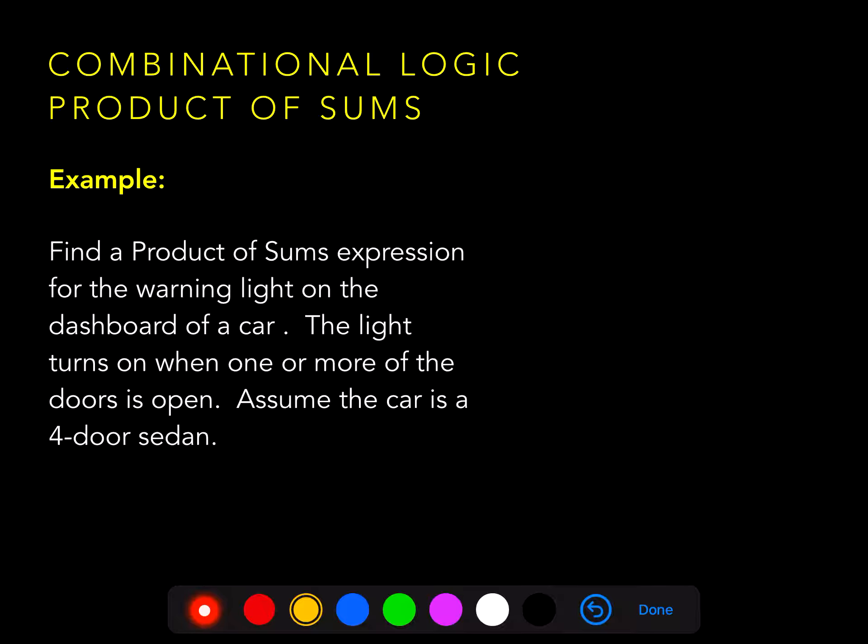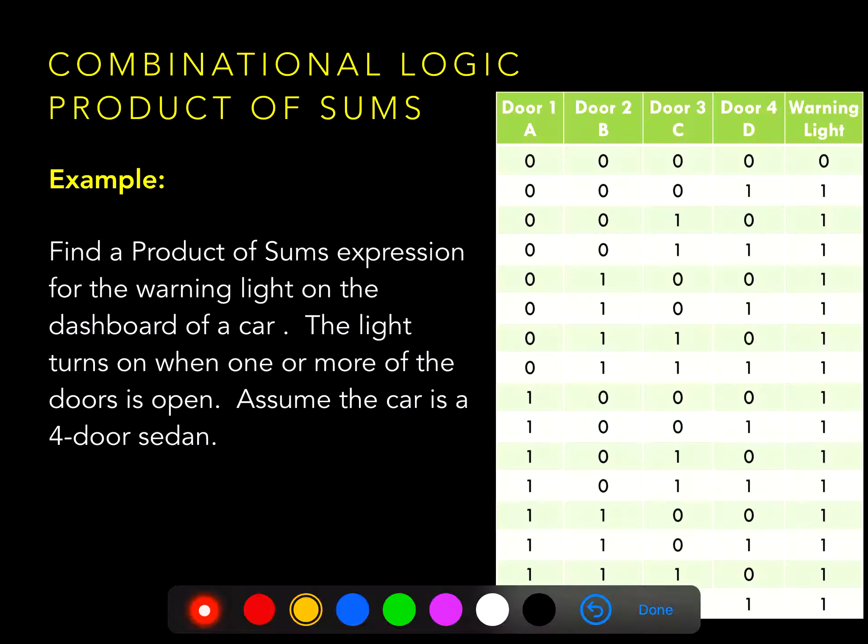Let's take a look at an example where that's the case. So here we'd like to find a product of sums expression for the warning light in the dashboard of a car. The light turns on when one or more of the doors is open. In this case, we only get one zero in the truth table. The warning light is off only when all four doors are closed.